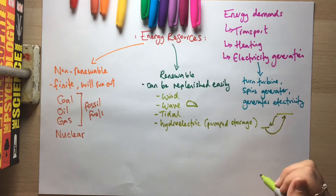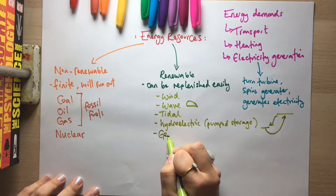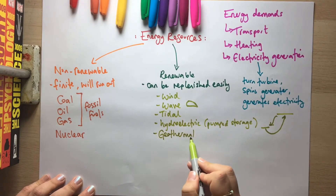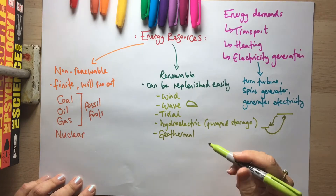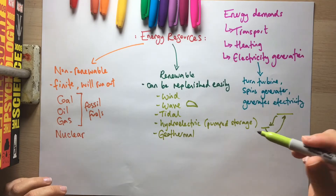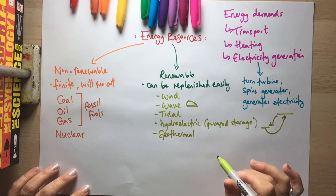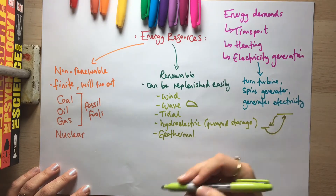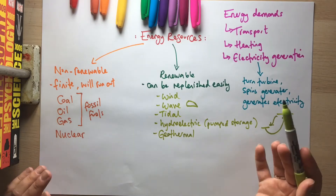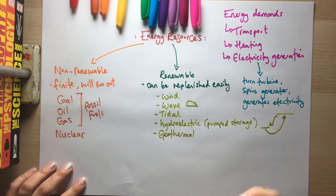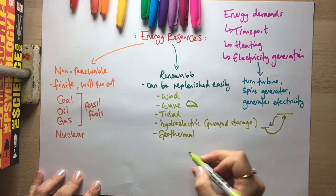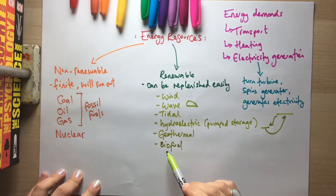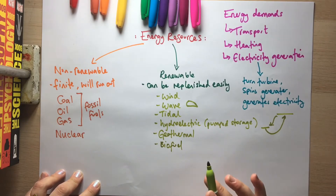Geothermal — 'geo' relating to the earth, 'thermal' meaning heat — uses heat from under the earth's surface. Iceland is great for geothermal, but it's very location-specific. Water is pumped down, heated up, and either the steam generated turns a turbine to spin a generator producing electricity, or the hot water itself can be used directly.